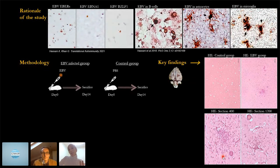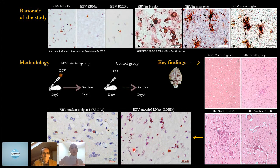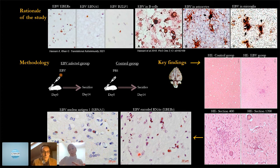Then, can EBV cross from the periphery into the CNS? The answer is yes — we could detect EBERs and another important latent viral antigen, EBNA, in the brains of animals in the EBV group, and these infected cells were scattered across different regions of the brain.